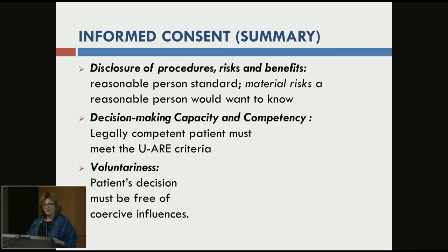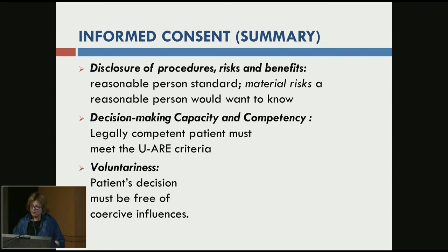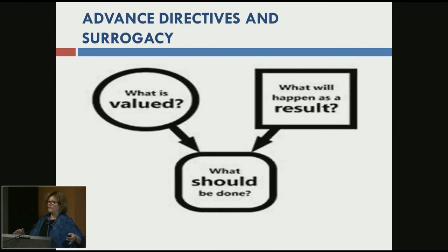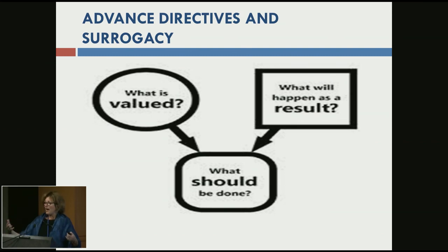To sum up the informed consent issues: there are three areas to be worried about — disclosure of risks and benefits, including material risks and the reasonable person standard; ensuring there is decision-making capacity and competency; and obviously there should be voluntariness and no coercion. Generally it's difficult to assess capacity until you've gone through everything with the patient, done the teach-back, and then determined that you need to bring in a surrogate decision-maker. So let's turn to advanced directives and surrogacy.